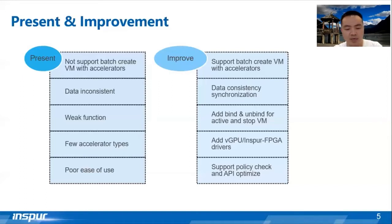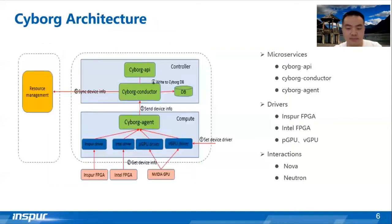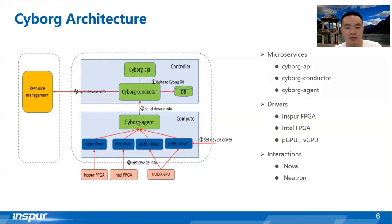We also support rich creator servers with accelerators to make accelerator devices more convenient to use. CYBOG is an accelerator resources management project using microservice architecture to support distributed deployment, which contains CYBOG API, CYBOG Conductor, and CYBOG Agent services. First, we need to set a driver config such as the GPU driver and the FPGA driver. Then CYBOG Agent collects accelerator resources information and reports it to the CYBOG Conductor, which stores accelerator resources information in the database and reports it to the placement resource management service.